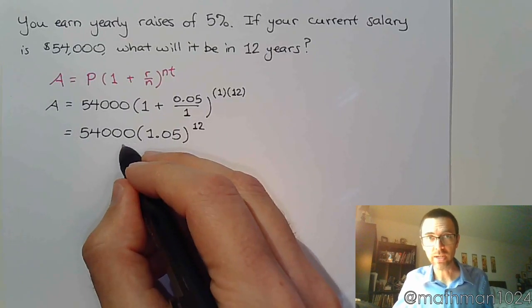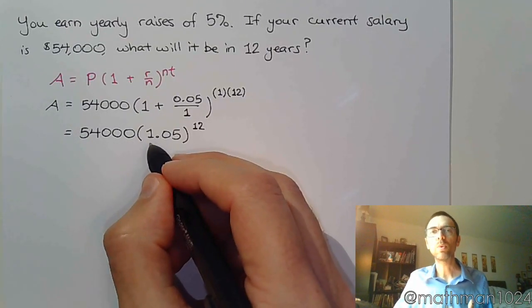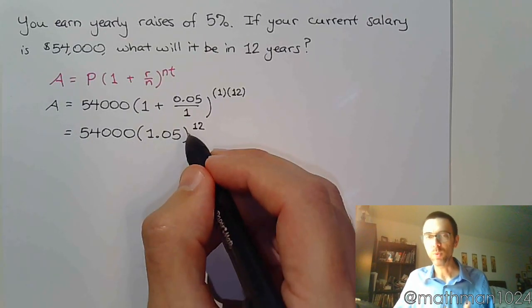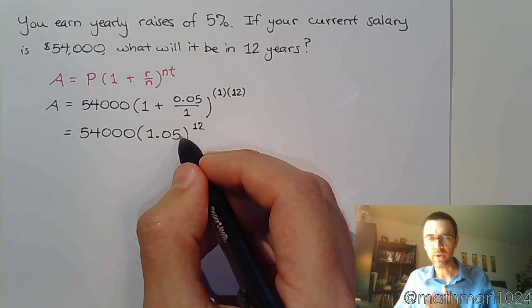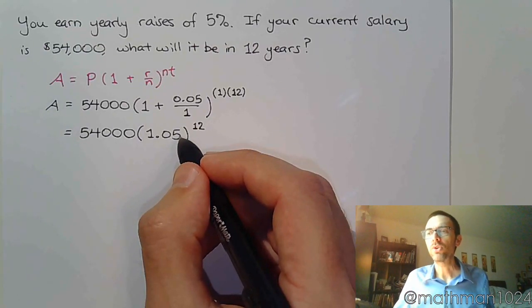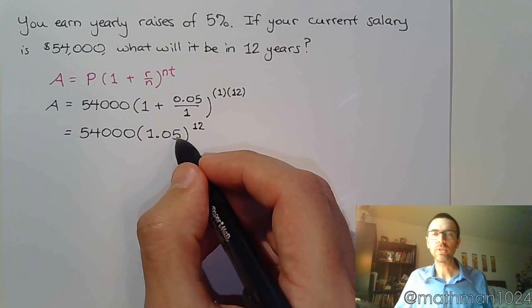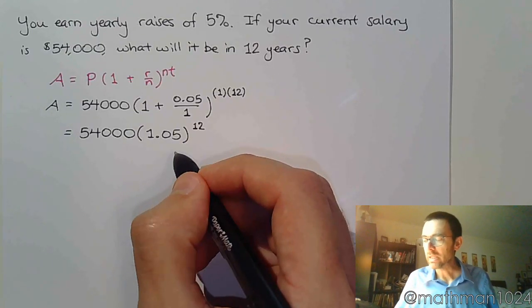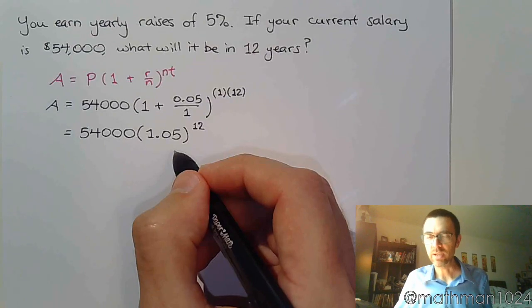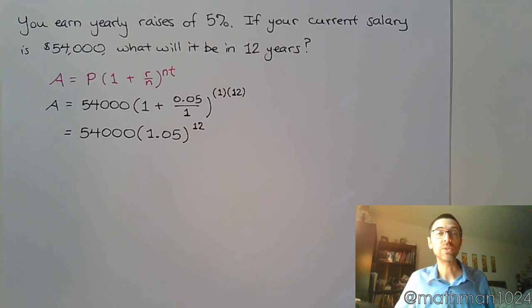What this is saying is that in 12 years, if you took your salary right now and multiply it times 1.05 times 1.05 times 1.05—you've got 12 factors of that—you're going 5%, 5%, 5%. That does not mean it's going to be 60% higher; it's actually going to be a lot more than 60% because of that compounding effect.